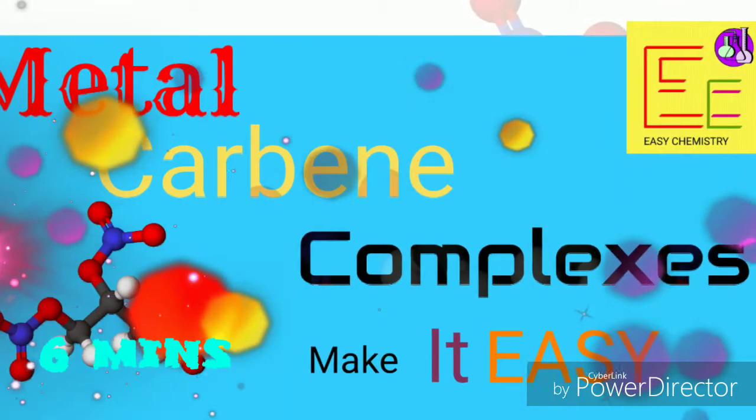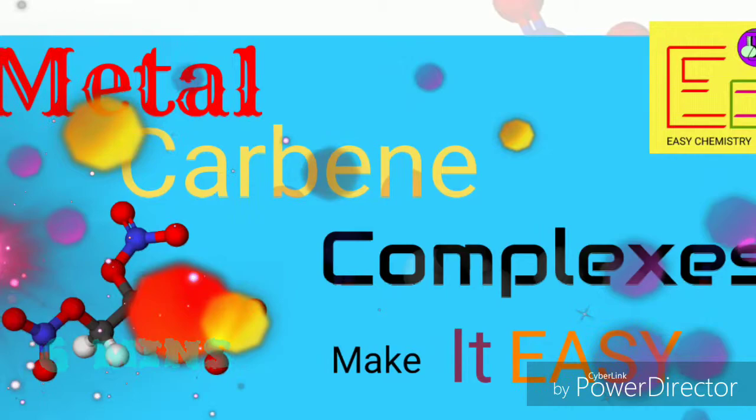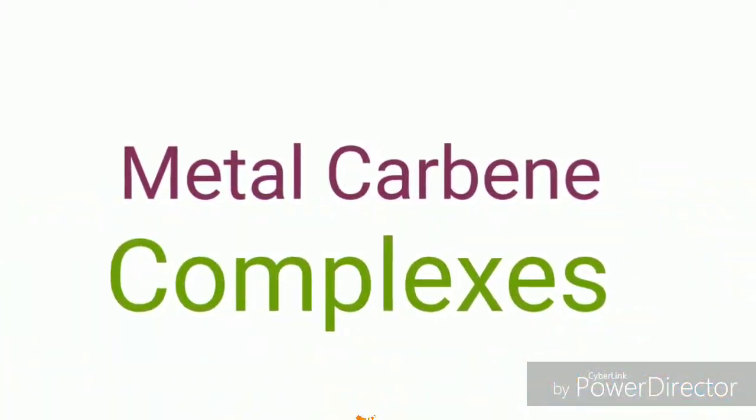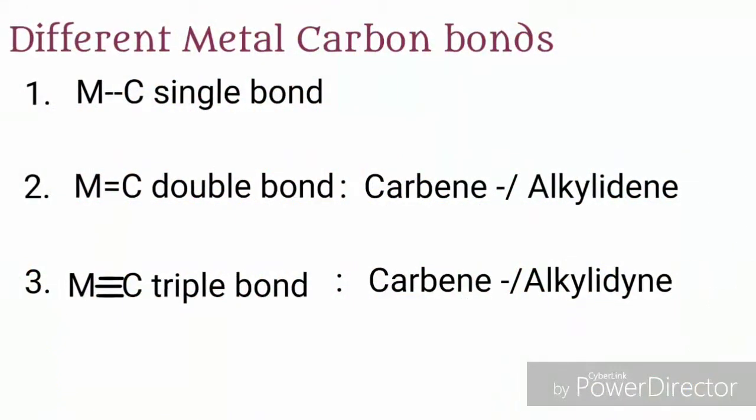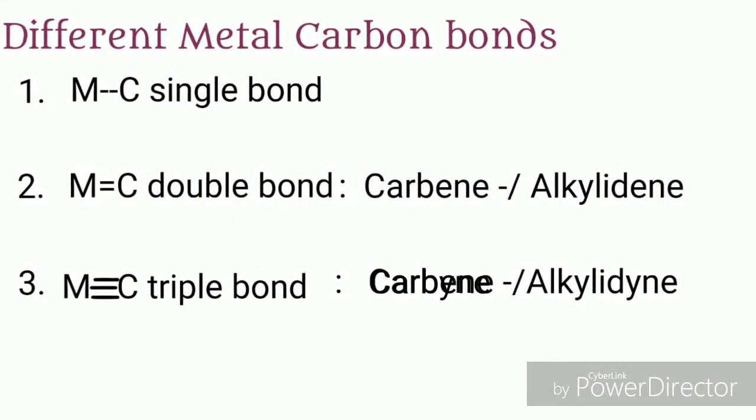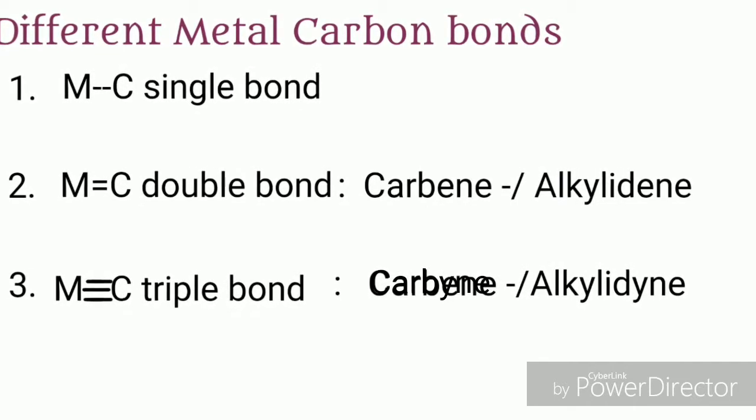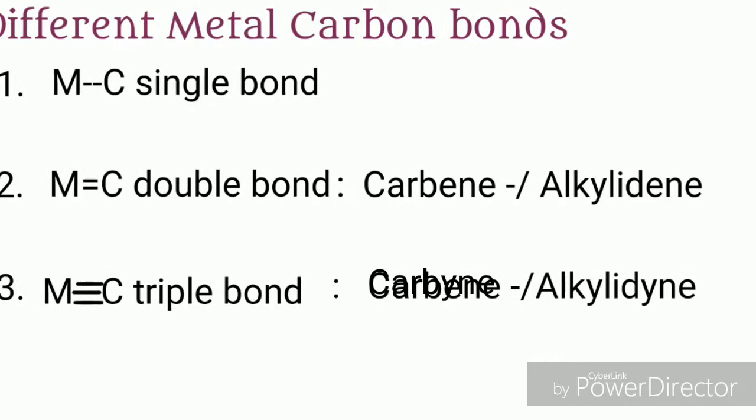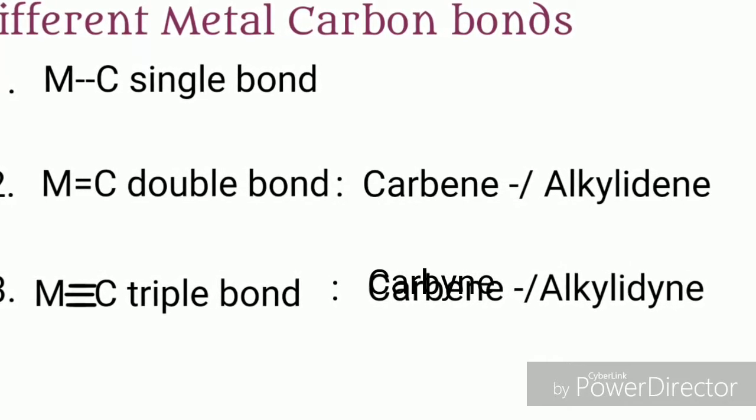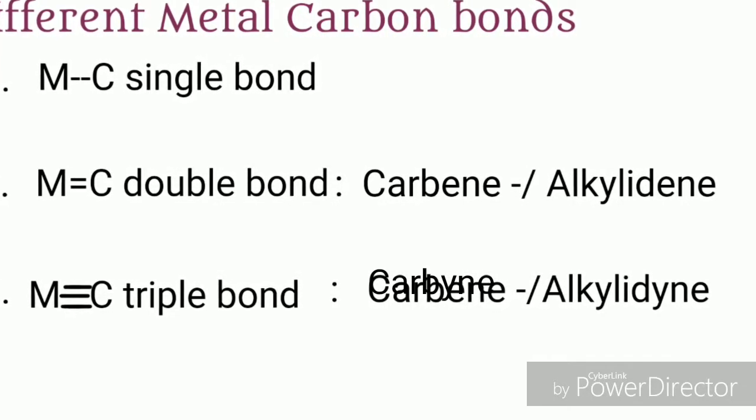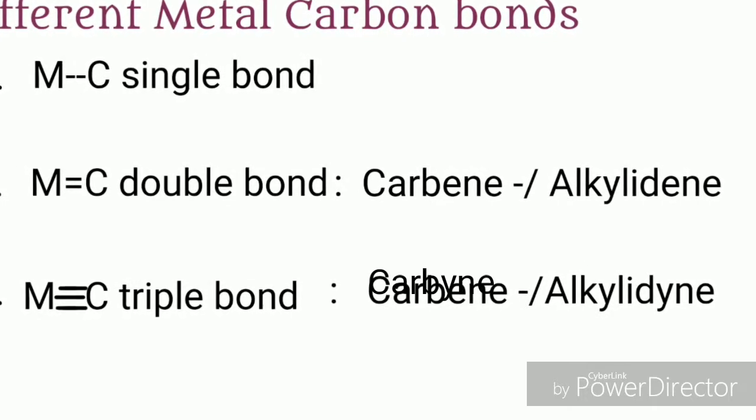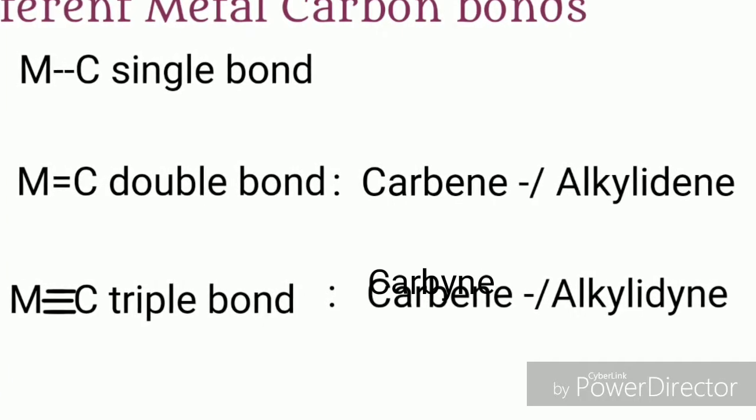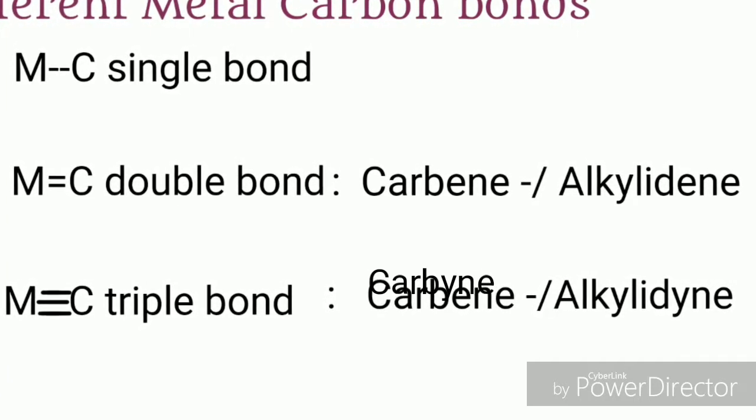Metal carbon complexes. Before we discuss about it, let's first know about the different metal carbon bonds. There are three types of metal carbon bonds: first, metal carbon single bonds; second, metal carbon double bonds; and third, metal carbon triple bond.